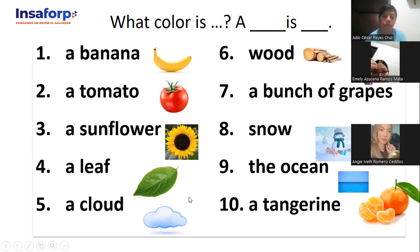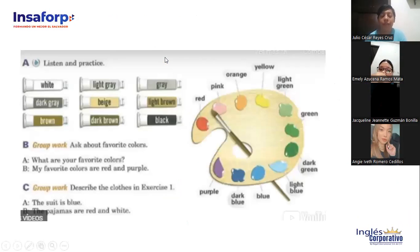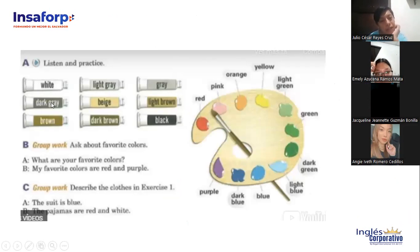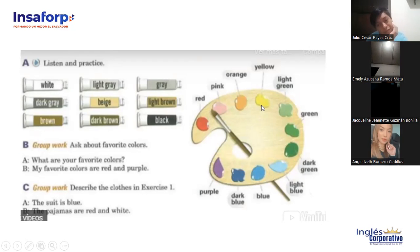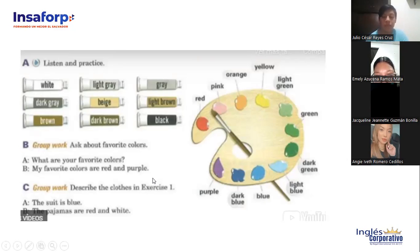So you know the colors in English. Over here you can see the colors. We have white, light gray, gray, dark gray, beige, light brown, brown, dark brown, and black. And we have others like red, pink, orange, yellow, light green, green, dark green, light blue, blue, dark blue, and purple. Can you tell me what are your favorite colors? You can say: my favorite colors are red and purple.